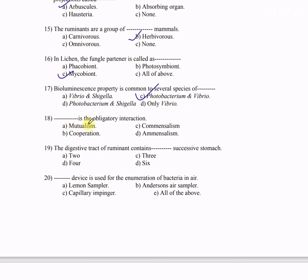Question 18: Dash is the obligatory interaction — A) mutualism, B) commensalism, C) cooperation, D) amensalism. The correct answer is A — mutualism. In mutualism, both species are benefited, while in commensalism one is benefited but the other is neither benefited nor harmed.